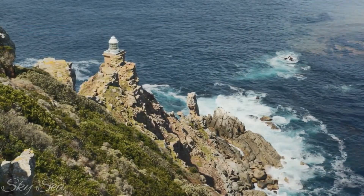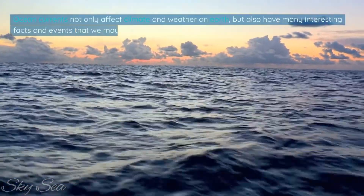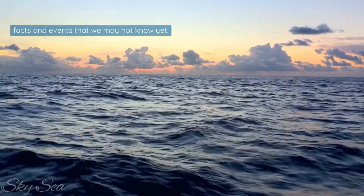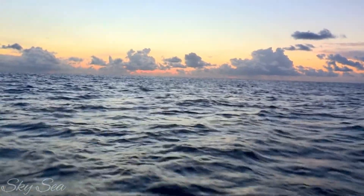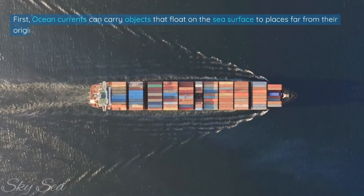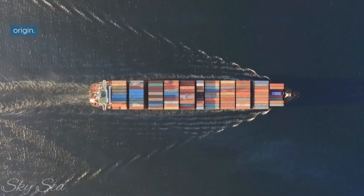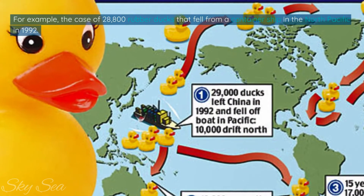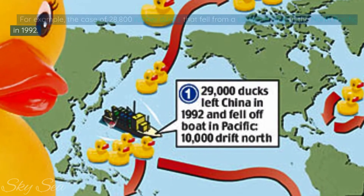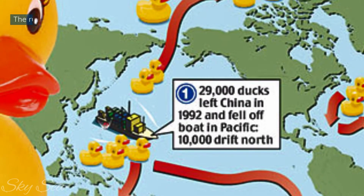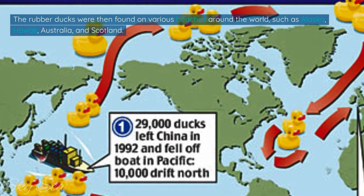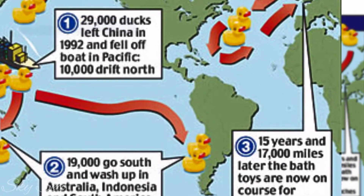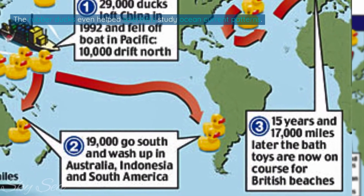Ocean currents not only affect climate and weather on Earth but also have many interesting facts and events. First, ocean currents can carry floating objects to places far from their origin — for example, 28,800 rubber ducks that fell from a container ship in the North Pacific in 1992. The rubber ducks were then found on various beaches around the world, such as Alaska, Hawaii, Australia, and Scotland.